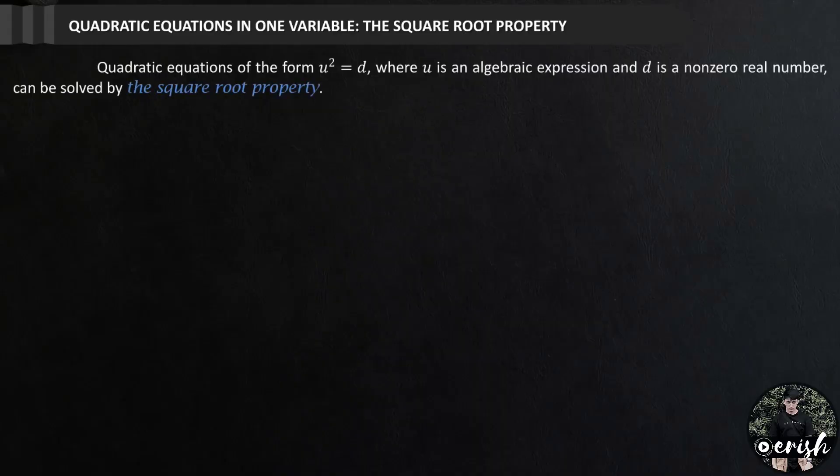Quadratic equations of the form u squared equals d, where u is an algebraic expression and d is a non-zero real number, can be solved by what we call the square root property.